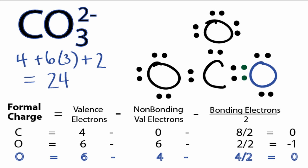There's one last thing we need to do. Because the CO3 2- ion has a charge of negative 2, we need to put brackets around our Lewis structure and put that negative 2 outside so everyone knows that it is an ion and it has a negative 2 charge.